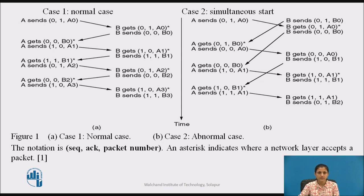In Figure B, half of the frames contain duplicates, even though there are no transmission errors. A similar situation can occur as a result of premature timeouts, even when one side clearly starts first. If multiple premature timeouts occur, frames may be sent three or more times, wasting valuable bandwidth.